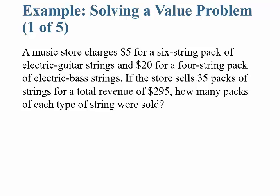A music store charges $5 for a six-string pack of electric guitar strings and $20 for a four-string pack of electric bass strings. Notice you have two things: a six-string pack for electric guitar and a four-string pack for electric bass. If the store sells 35 packs of strings total — we don't know how many of each — for a total revenue of $295, how many packs of each type of strings were sold?